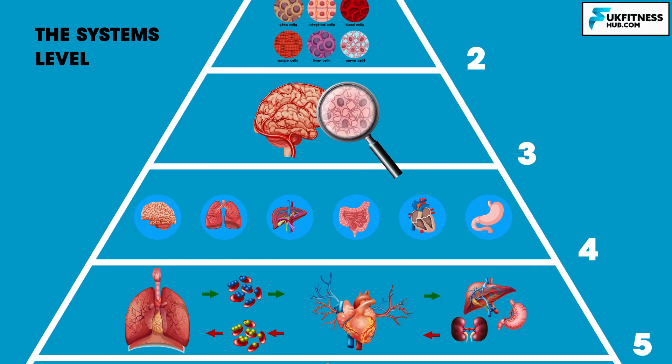Level 5: the systems level. Systems are formed by a number of organs working together for the same common function. There are 11 major systems within the human body and we'll be learning more about these as we go through the series. Systems that work together include the respiratory system, which takes oxygen in, and the cardiovascular system, that transports oxygen to various parts of the body.